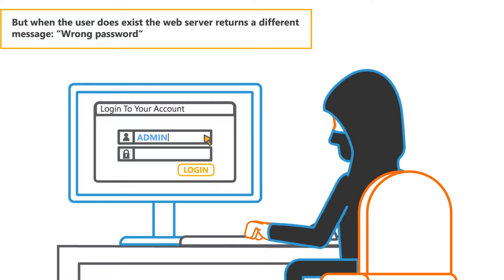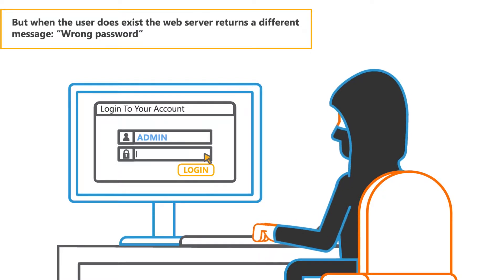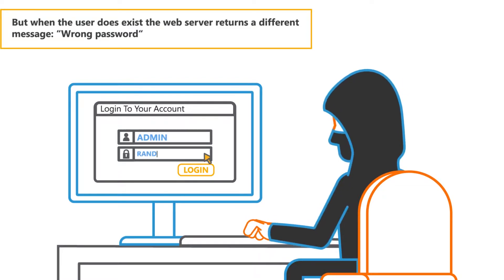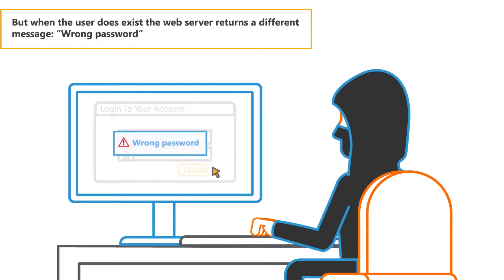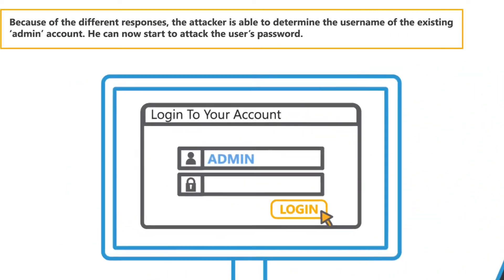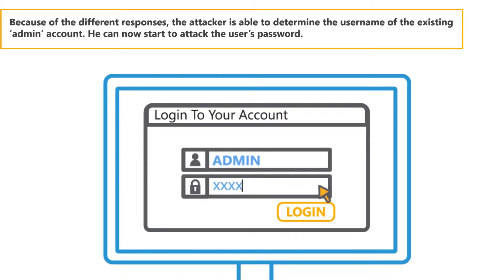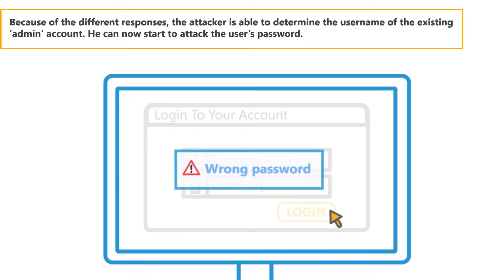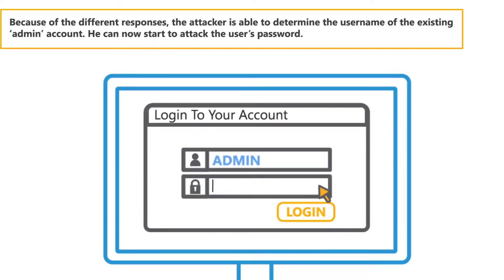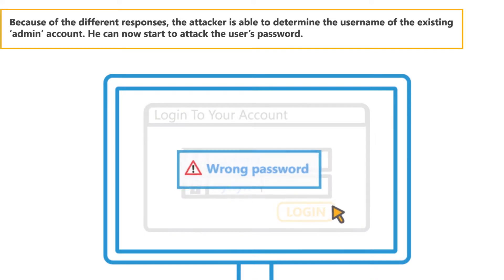But when the user does exist, the web server returns a different message: Wrong password. Because of the different responses, the attacker is able to determine the username of the existing admin account. He can now start to attack the user's password.